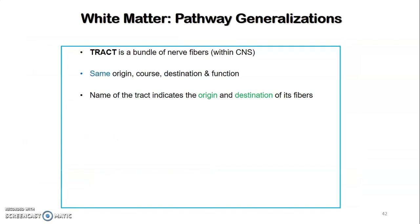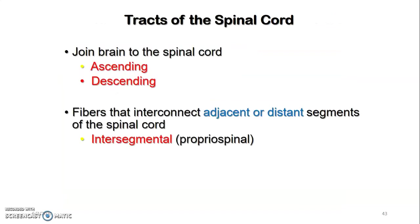White matter pathways are tracts — bundles of myelinated nerve fibers sharing the same origin, course, destination, and function. The name of a tract indicates its origin and destination; for example, corticospinal means from the cerebral cortex to the spinal cord. Tracts of the spinal cord can be ascending, carrying sensory information, or descending, carrying mostly motor information. Fibers that interconnect adjacent segments of the spinal cord are called intersegmental or proprio-spinal tracts.